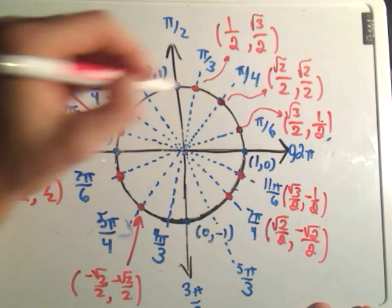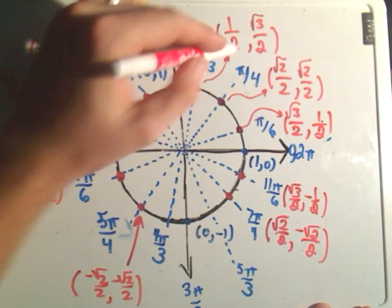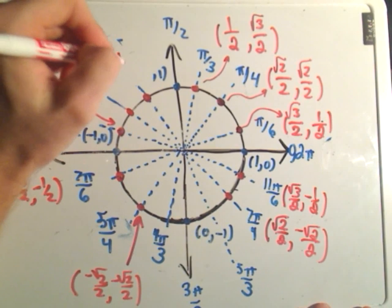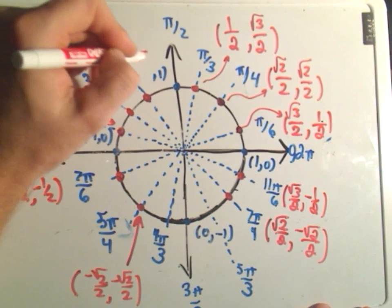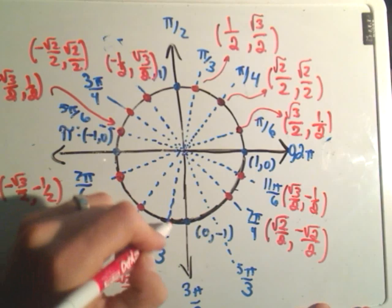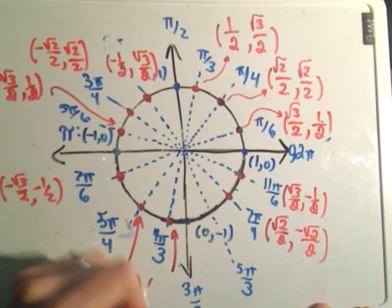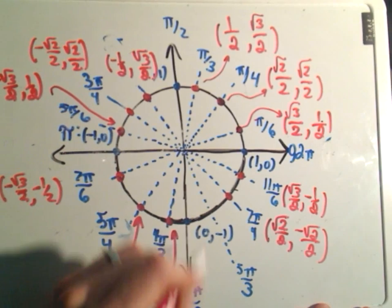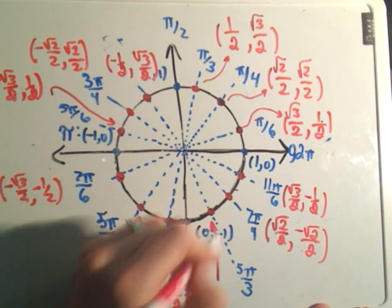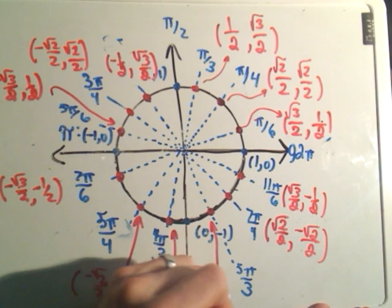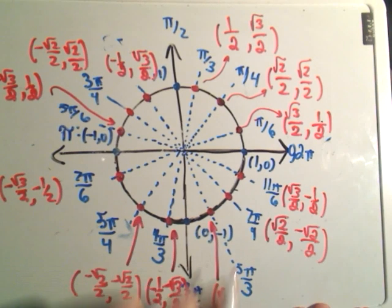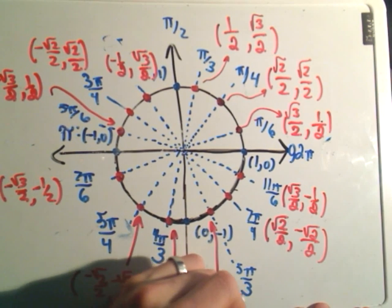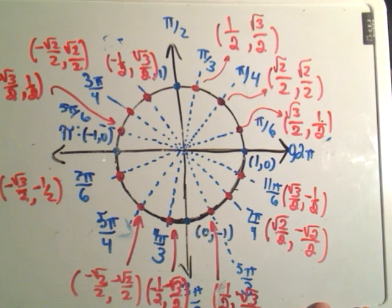For π/3, the point is (1/2, √3/2). Up in the second quadrant at 2π/3 it'll be (-1/2, √3/2). In the bottom left at 4π/3 both are negative: (-1/2, -√3/2). And in the bottom right at 5π/3, the x-coordinate is positive: (1/2, -√3/2).